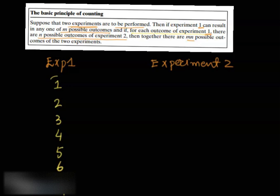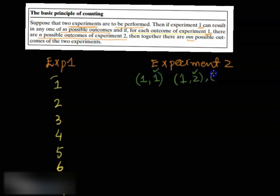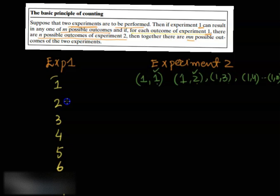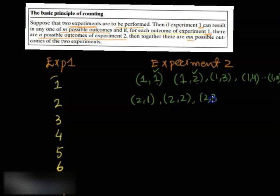Think of it this way: with outcome 1 from experiment 1, experiment 2 can give outcomes 1, 2, 3, up to N. Similarly, if the outcome of experiment 1 is 2, then experiment 2 can give outcomes 1, 2, 3, up to N. This process continues for every outcome of experiment 1.